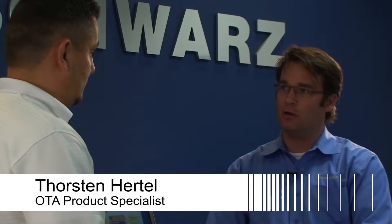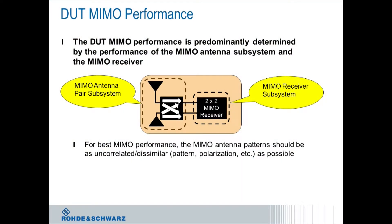There is. So first of all, let's look at the overall MIMO performance of a device. Generally it is determined by either the MIMO antenna pair subsystem, shown in this graphic right here — two antennas and the internal antenna correlation — and then the 2x2 MIMO receiver. Both of these are very important to determine the overall figure of merit of the MIMO performance. But there is a way to look at the figure of merit of the antenna subsystem performance without the added complexity, without having to do a full LTE MIMO measurement, and simply looking at the antennas one by one with a very regular SISO system.